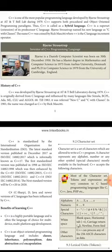C++ was originally derived from C language — it was somewhat similar to C language. It was also influenced by many languages like Simula, BCPL, ADA, ML, CLU, and ALGOL 68. So from C only, C++ was derived.